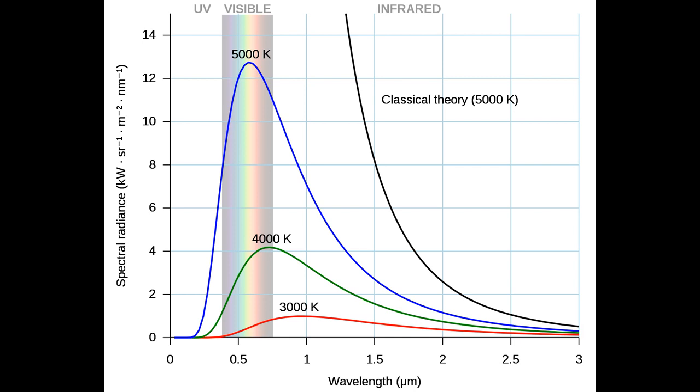In astronomy, the radiation from stars and planets is sometimes characterized in terms of an effective temperature, the temperature of a black body that would emit the same total flux of electromagnetic energy.